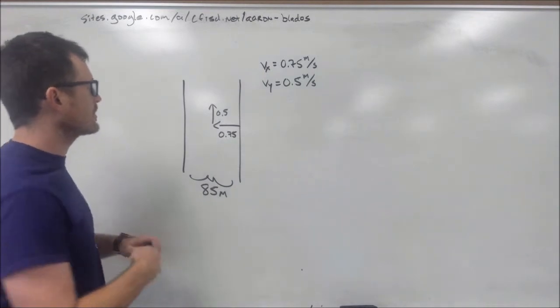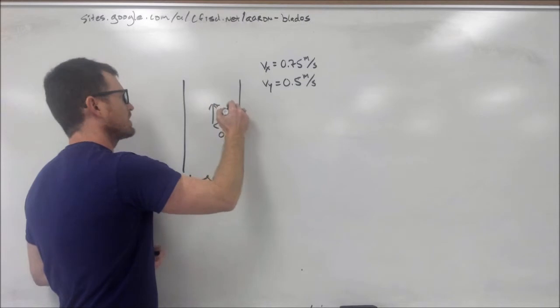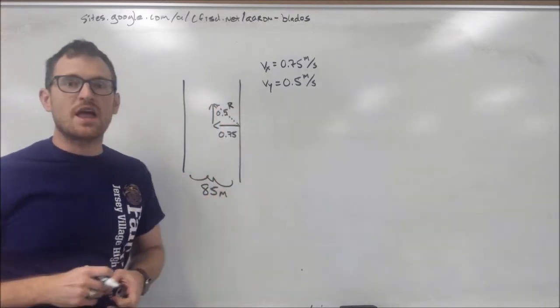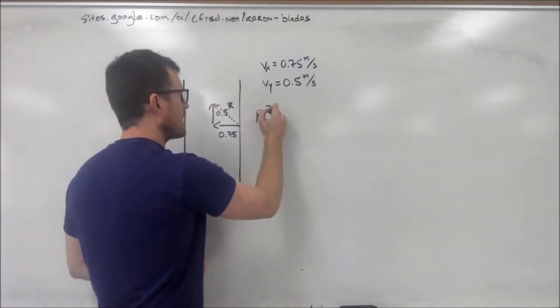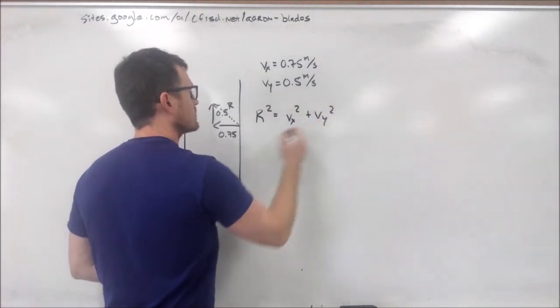Now, the first thing we're going to do is try to find our resultant velocity, our resultant vector, big R. Just like with our last video, we have R squared is equal to, in this case, Vx squared plus Vy squared.